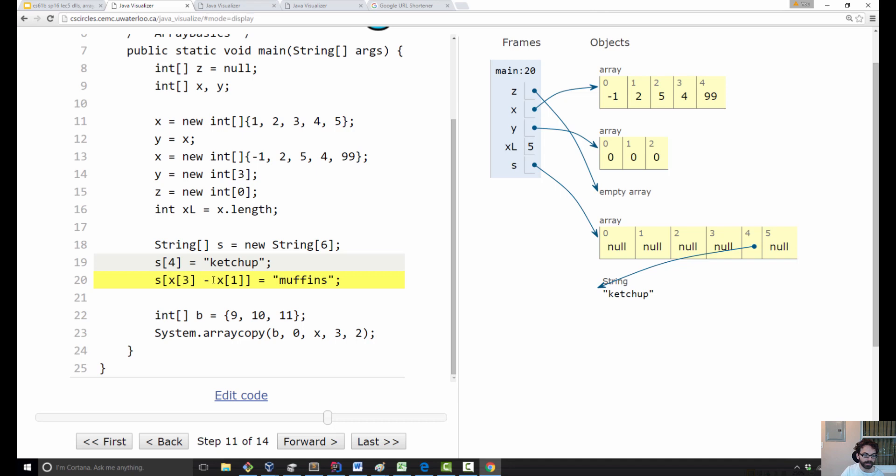So it's first going to go to x3, 4, x1, 2, 2. And that's going to say 4 minus 2 is 2. So it'll go to s2. And it'll set this equal to the address of a new string, muffins. Next, we'll create an int array b. That one's not very interesting. It's just the same as we've done before.